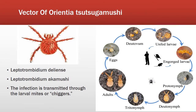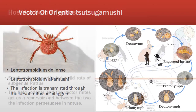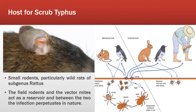The vectors of Orientia tsutsugamushi are Leptotrombidium deliense and Leptotrombidium akamushi. The infection is transmitted through the larval mites or chiggers. The main hosts are small rodents, particularly wild rats of the subgenus Rattus. The field rodents and vector mites act as a reservoir, and between the two the infection perpetuates in nature.